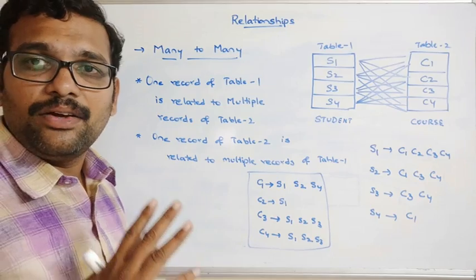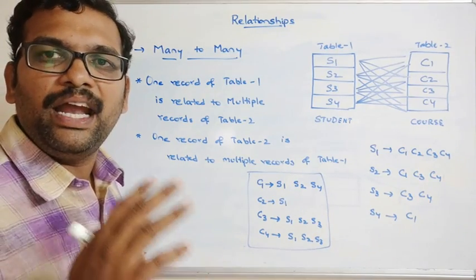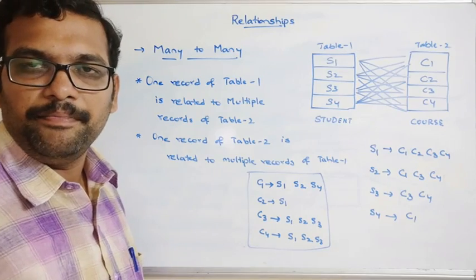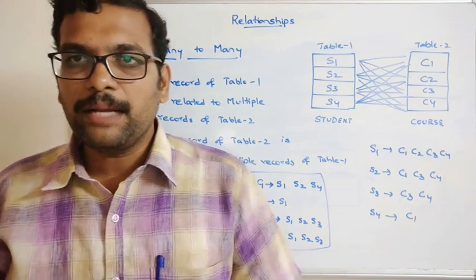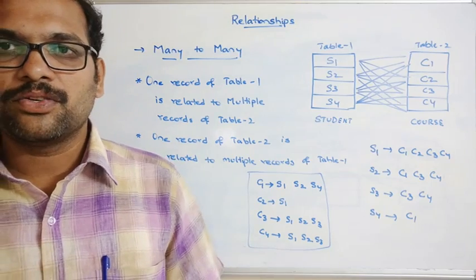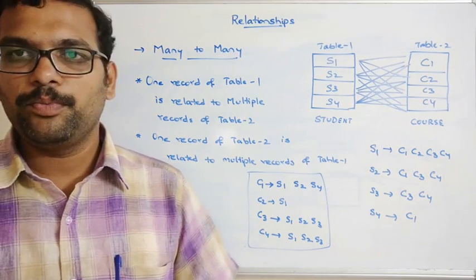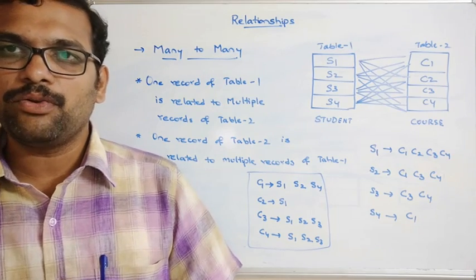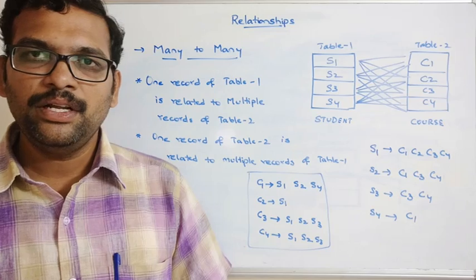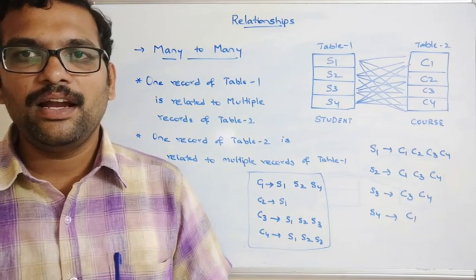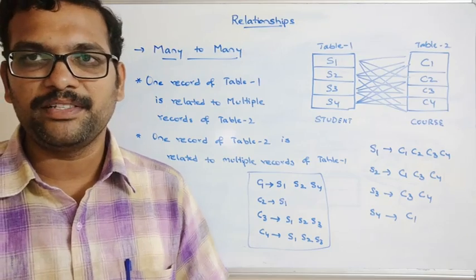These are the three categories of relationships in DBMS: one-to-one, one-to-many, and many-to-many. Hope you understood these different types of relationships. If you have any doubts, feel free to post them in the comment section and I will try to clarify. If you enjoyed the session, like and share it with your friends, and don't forget to subscribe to our channel. Thanks for watching.